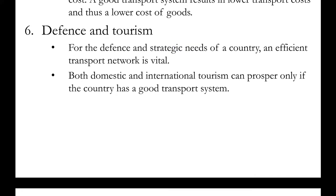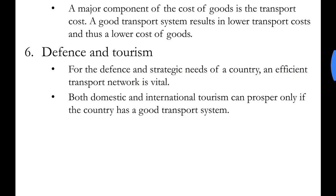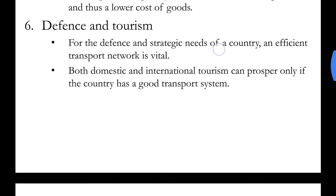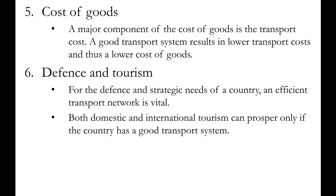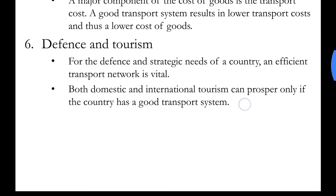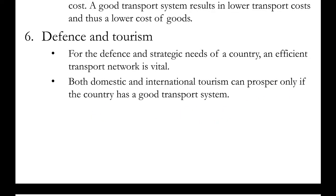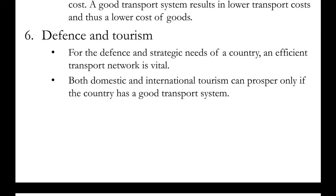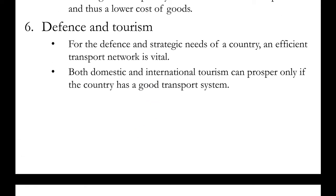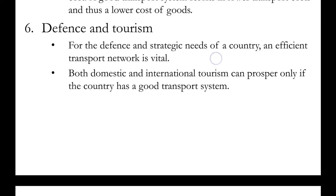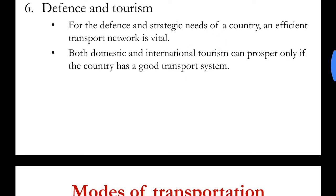Next: Defense and Tourism. For the defense and strategic needs of the country, an efficient transport system or network is vital. For defense purposes, we need roads and railways for hauling or carrying equipment to the required site. Both domestic and international tourism can prosper only if the country has a good transport system. For domestic tourism, there is a requirement of roadways, railways, and also airways for far-away destinations. Tourist spots at places with no road or rail connectivity use airways for better comfort, and for international tourism we use waterways by ship or airways.